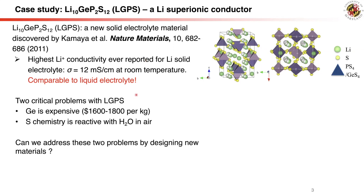However, this new material has two critical problems. Germanium is too expensive for large-scale applications such as electric vehicles. Additionally, this thiophosphate sulfide has poor stability in air, which increases cost for materials processing and cell manufacturing.